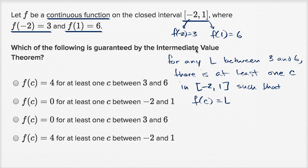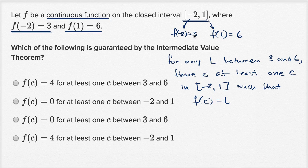Just saying it in everyday language: this is a continuous function. If I were to draw the graph, I can't pick up my pencil — so it makes sense that I would have to take on every value between three and six. There's at least one point in this interval where I take on any given value between three and six.